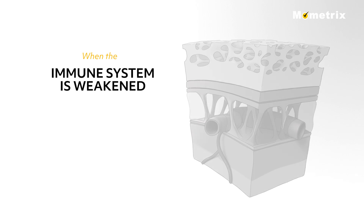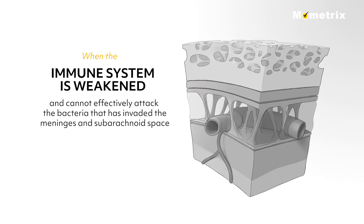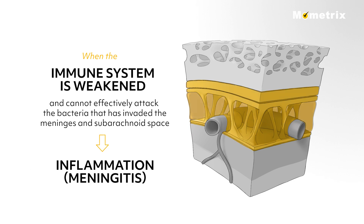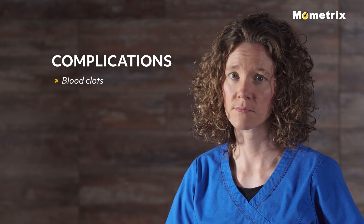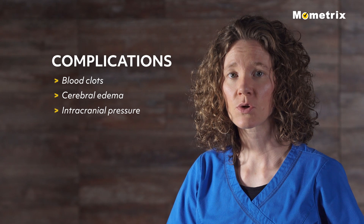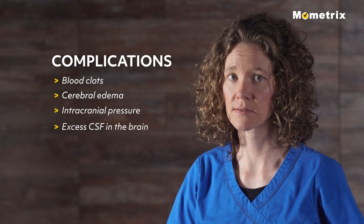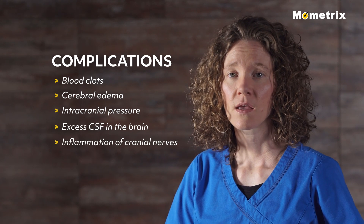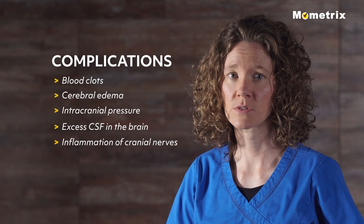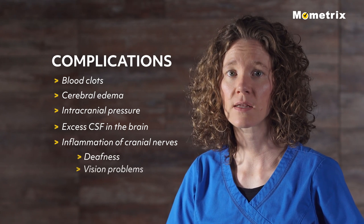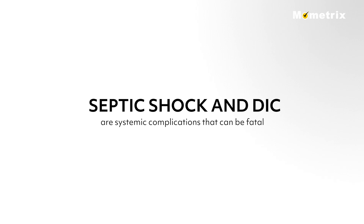When the immune system is weakened and cannot effectively attack the bacteria that has invaded the meninges and subarachnoid space, the result is inflammation, which can also cause complications such as blood clots, cerebral edema, intracranial pressure, excess CSF in the brain, inflammation of cranial nerves resulting in deafness, vision problems, and other nerve problems. Septic shock and DIC are systemic complications that can be fatal.